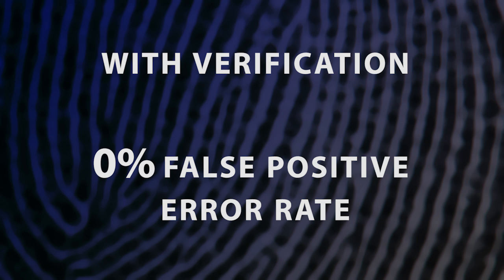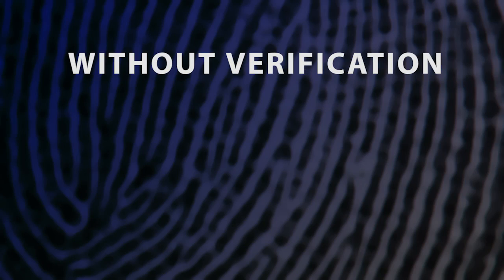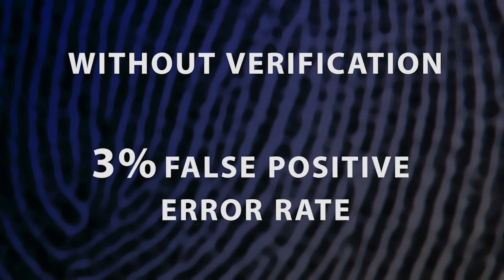When looking at ACE comparisons without verification — where one latent examiner analyzed, compared, evaluated, and came up with a decision — there was a false positive rate, meaning an erroneous identification where they identified the wrong source. Without verification, there was a 3% error rate for that type of identification.